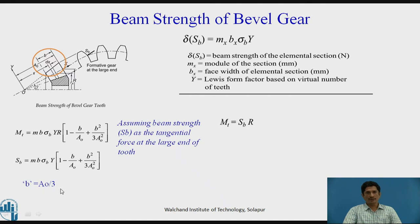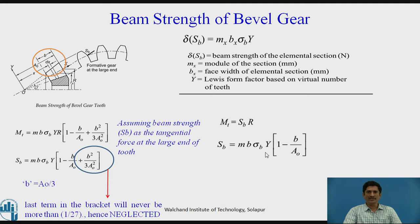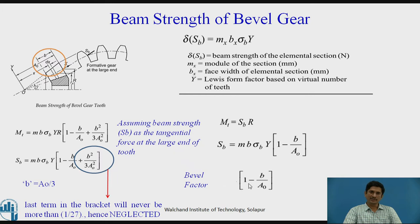We know that b = A₀/3. Hence the third term in the equation of Sb is very negligible — it is always less than 1/27 and we can neglect it. Neglecting that term, the equation of beam strength changes to: Sb = m × b × sigma_b × y × (1 - b/A₀). In addition to the spur gear beam strength equation, this bracket is called the bevel factor, represented as (1 - b/A₀).